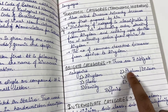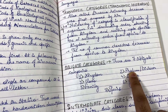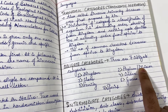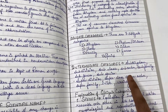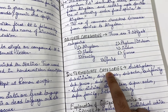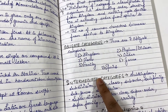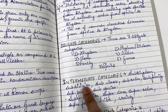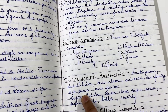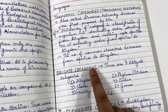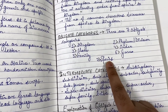Phylum or division is known as phylum in animals and division in plants. Apart from the seven obligate categories, we also have intermediate categories that fall between the obligate categories: sub-kingdom, subdivision, sub-class, sub-order, sub-family, sub-genus, and sub-species.